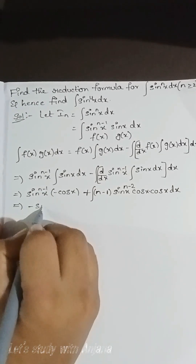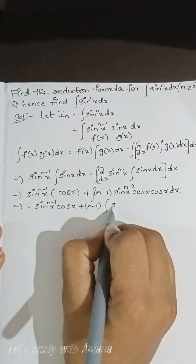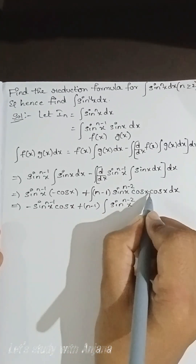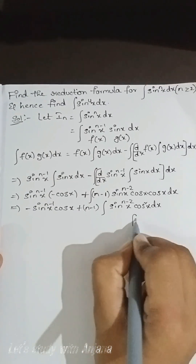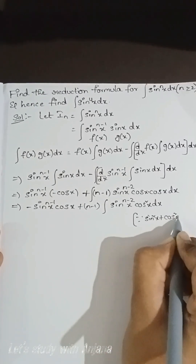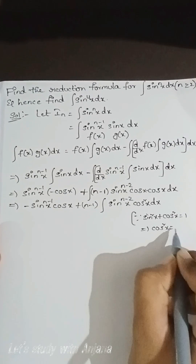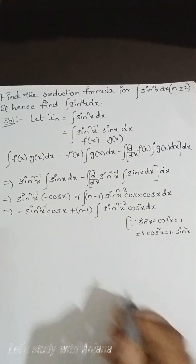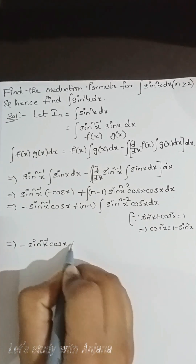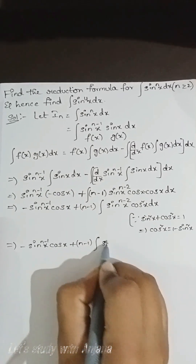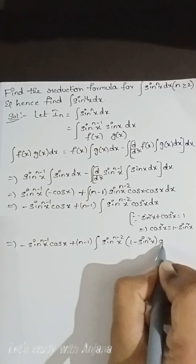That implies: −sin^(n-1)(x)·cos(x) + (n-1)·∫sin^(n-2)(x)·cos²(x) dx. Now we use the identity sin²(x) + cos²(x) = 1, so cos²(x) = 1 − sin²(x). Substituting: −sin^(n-1)(x)·cos(x) + (n-1)·∫sin^(n-2)(x)·(1 − sin²(x)) dx.